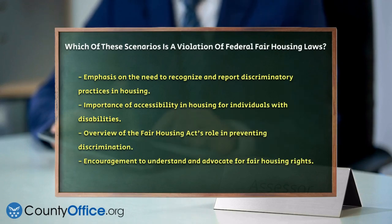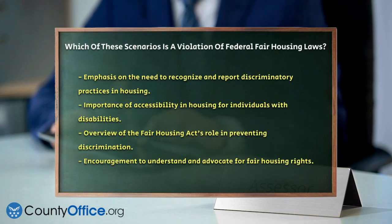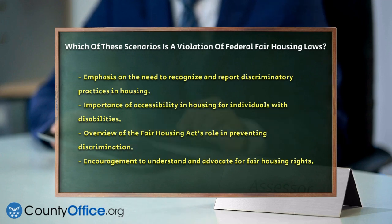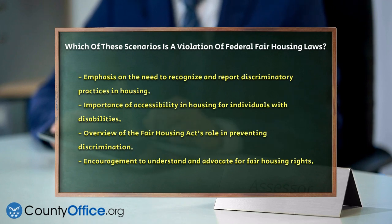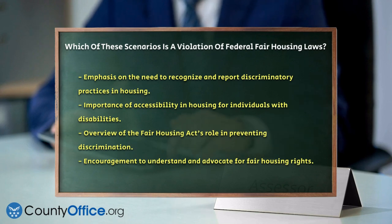Scenario 6: Blockbusting and steering. Persuading homeowners to sell their properties because a particular protected class is about to move into the neighborhood — known as blockbusting — and directing specific groups to or away from certain neighborhoods — known as steering — are both violations. These scenarios highlight the various ways in which federal fair housing laws can be violated.